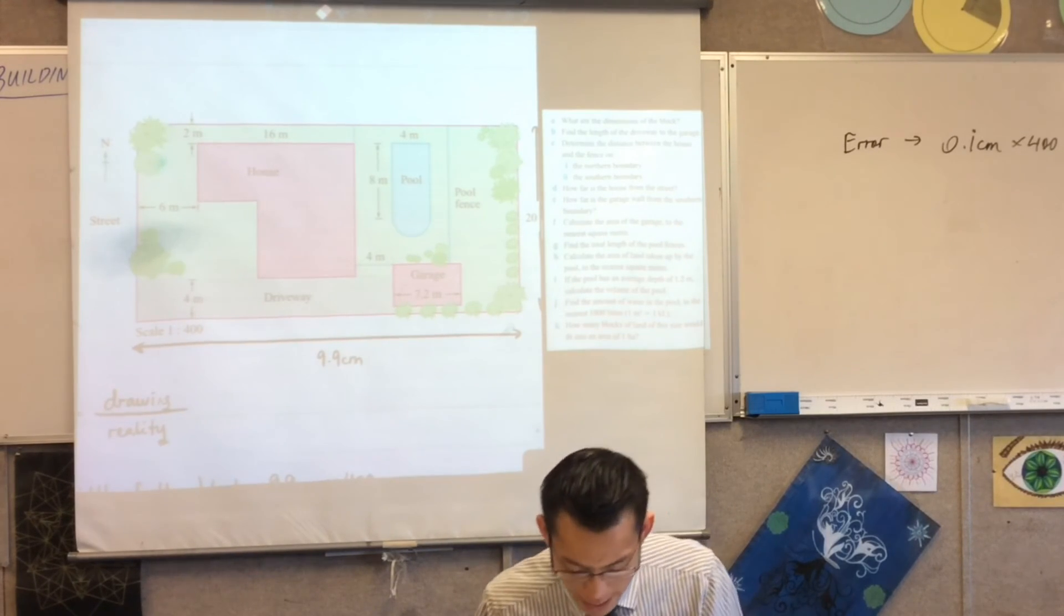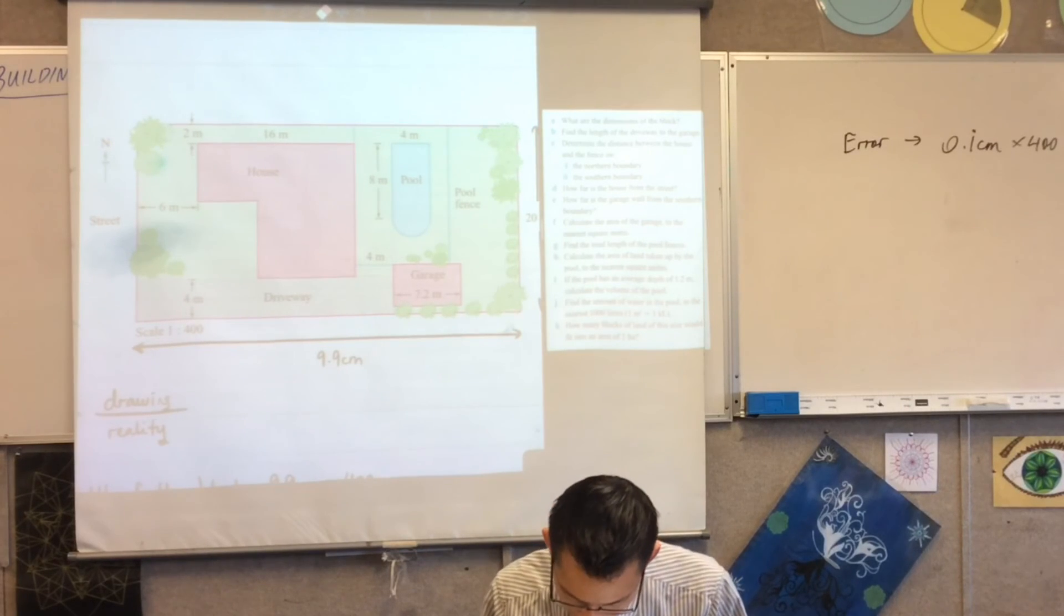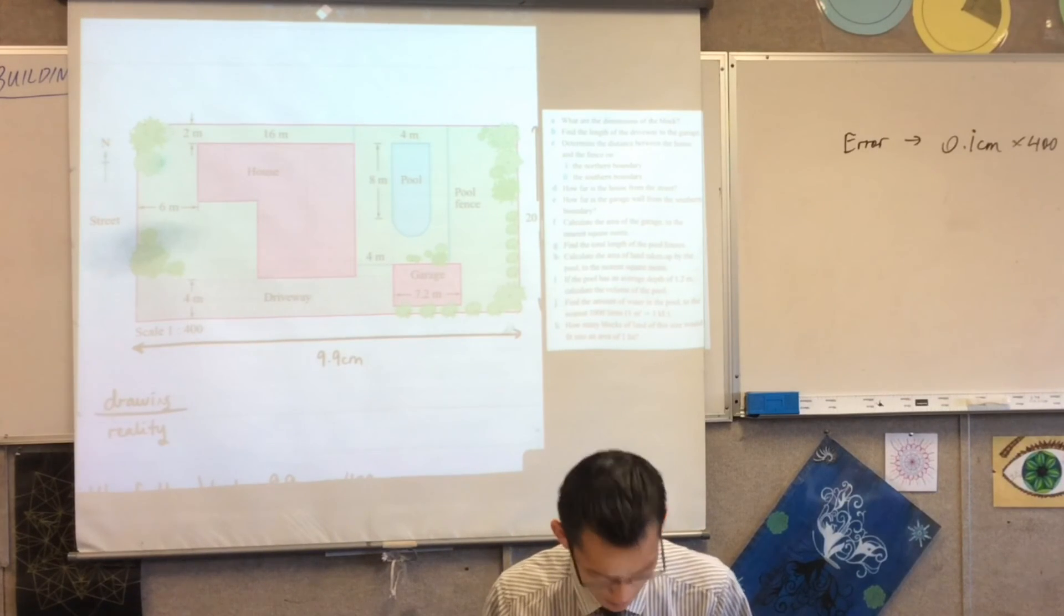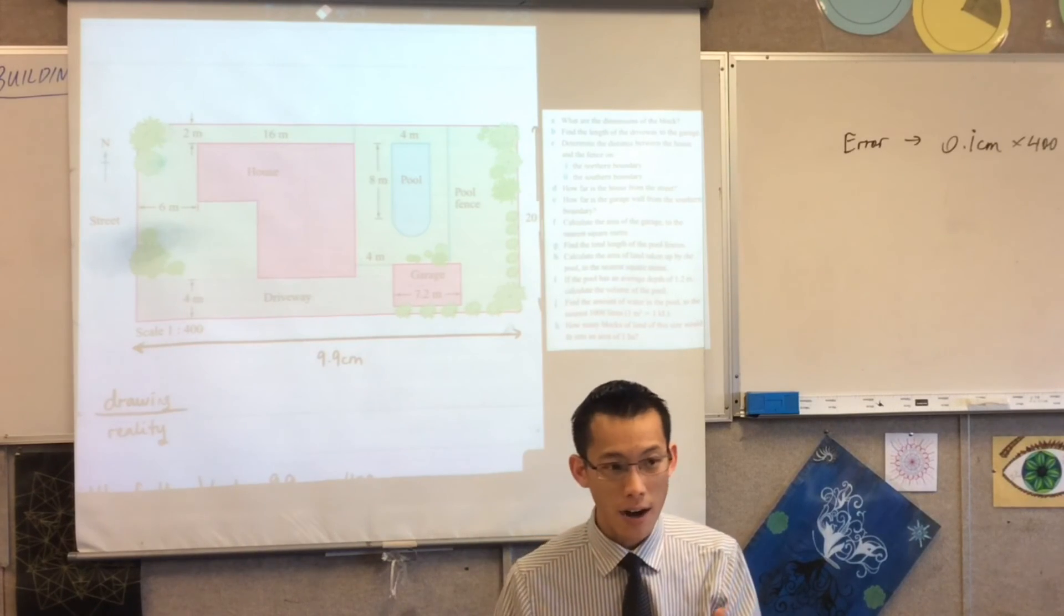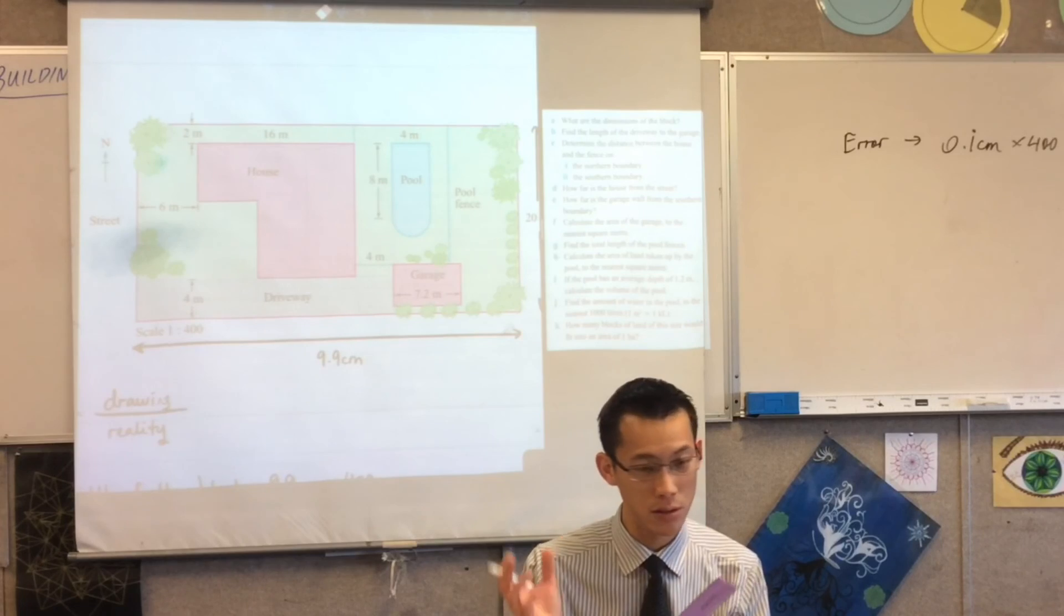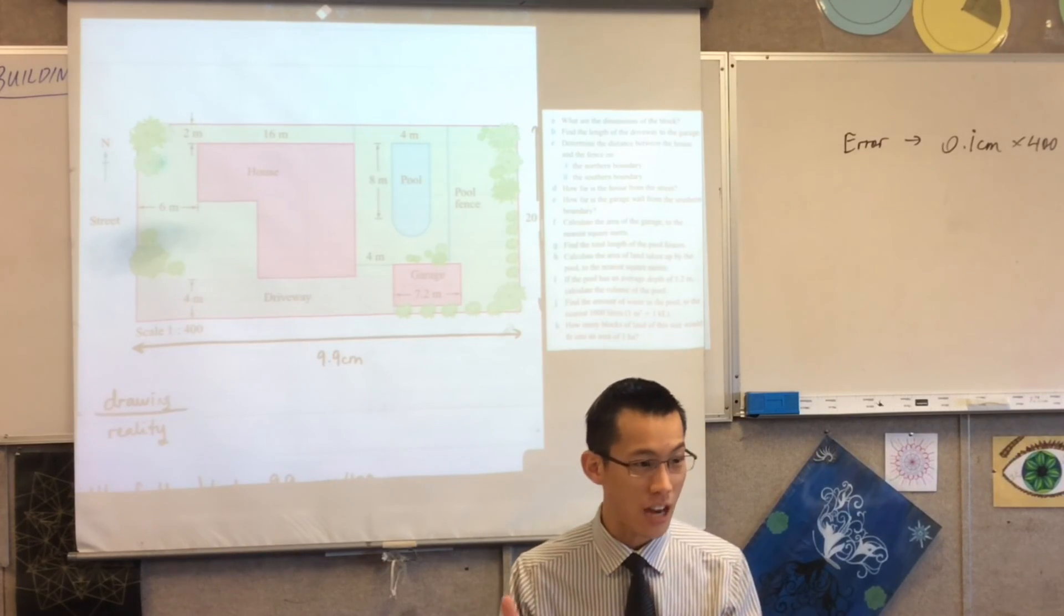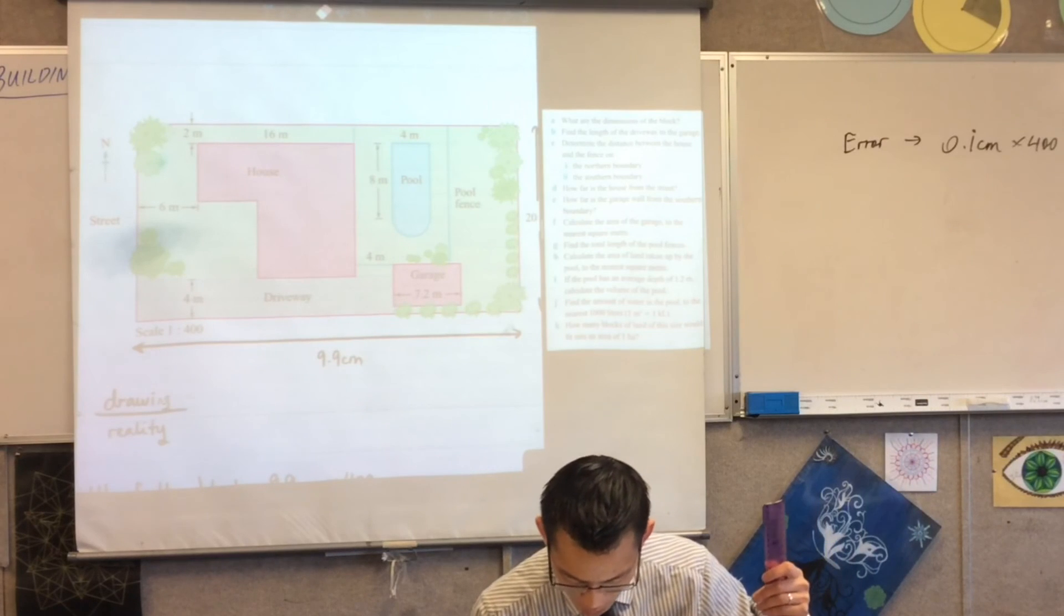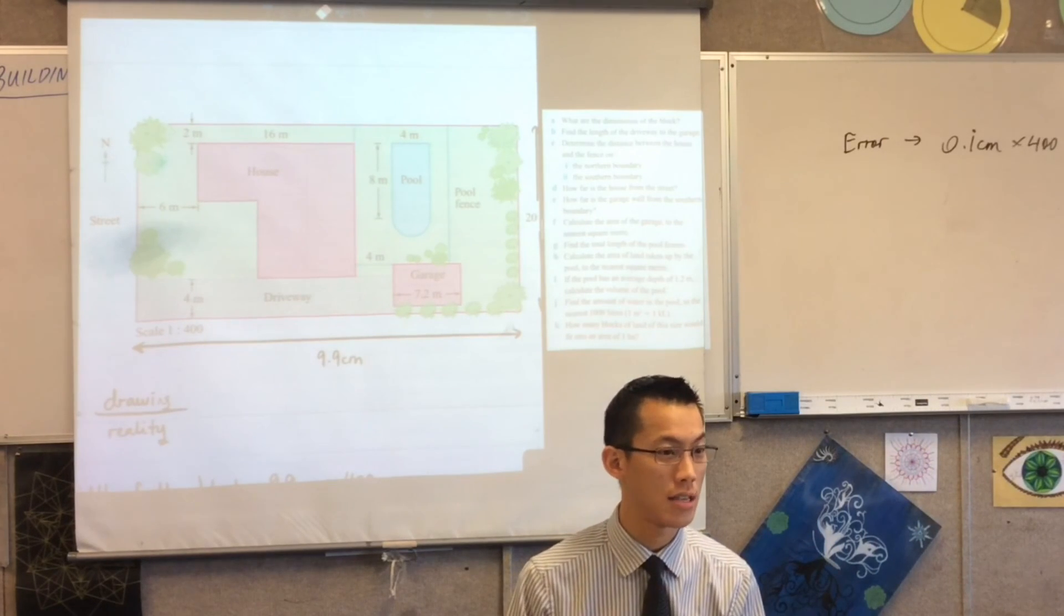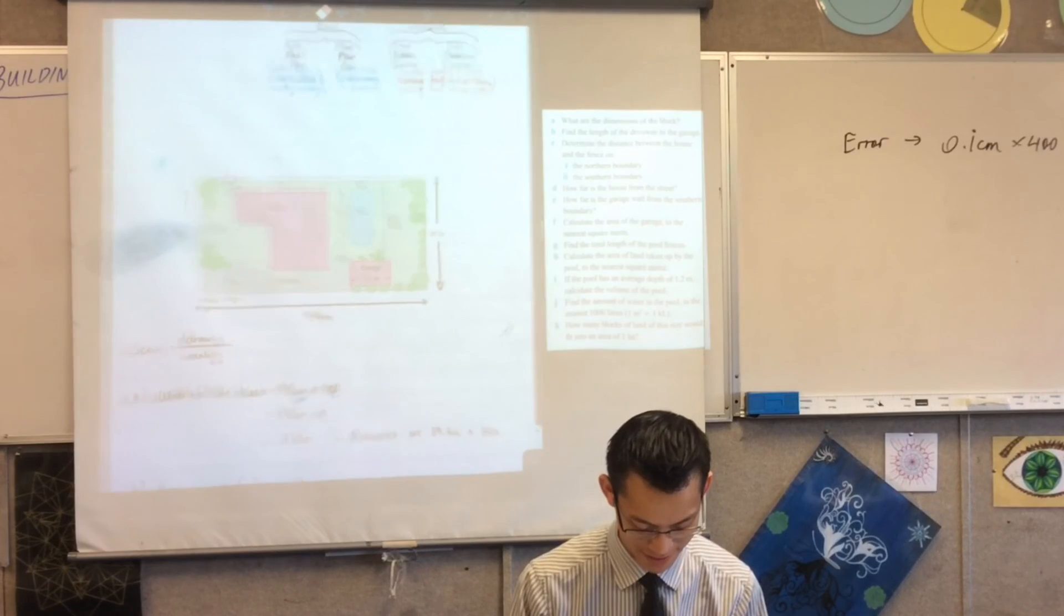After that I think most of the ones you can just read off. Part E, now you have to be pretty careful here because it's such a small distance. The error as a percentage is going to be quite large. Do your best, measure from the garage to the southern boundary.